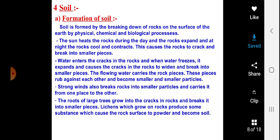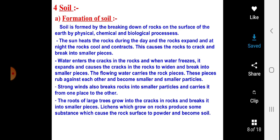Lichens, which are a mixture of algae and fungus, also grow on the rock and produce some substance which causes the rock surface to powder and become soil. So many elements work towards the breaking of rock and making of soil — water, wind, temperature and living organisms like lichens are all working on rocks to convert them into soil particles. It is not a day's task or a month's task but it takes millions of years to produce the soil on which we are living right now.